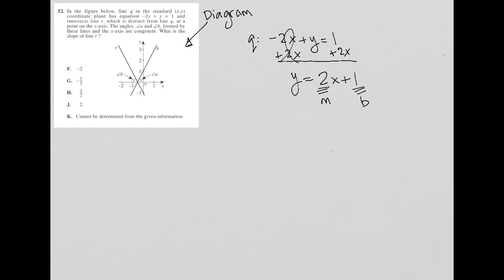So it says, and intersects line R, which we see it does intersect right here on the X-axis, which is distinct from line Q. Yes, we see that it's distinct at a point on the X-axis. The angles A and angle B formed by these lines and the X-axis are congruent. Okay, well, that's important.